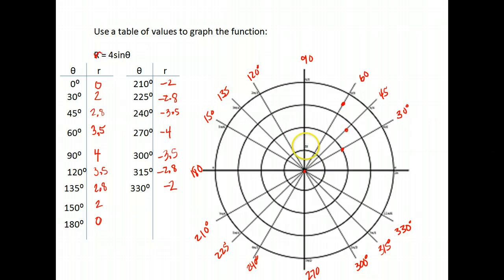90, 4. So we open up to 90 degrees and go out 1, 2, 3, 4. 120, 3.5. So we open up to our 120 and go out 1, 2, 3.5 towards that angle.